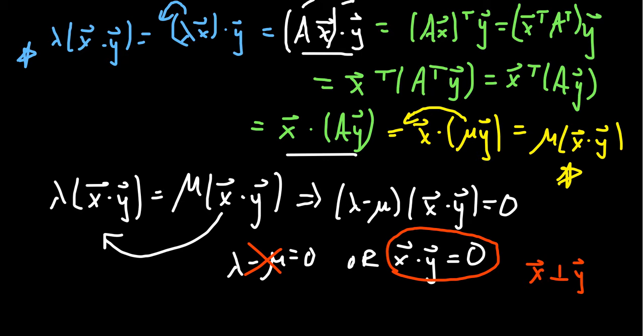The argument is exactly the same for a Hermitian matrix. The only real difference is that when you pull out the scalar in the first factor you take the conjugate, so you end up with lambda-bar minus mu equals zero. But this isn't a concern because for symmetric and Hermitian matrices the eigenvalues are always real, so taking the conjugate makes no difference. This proof works equally well for Hermitian matrices.